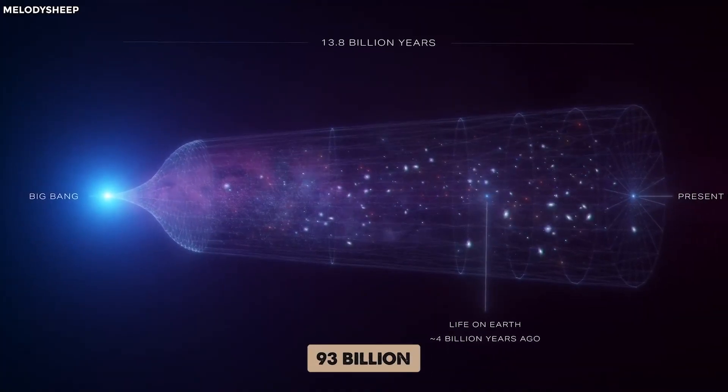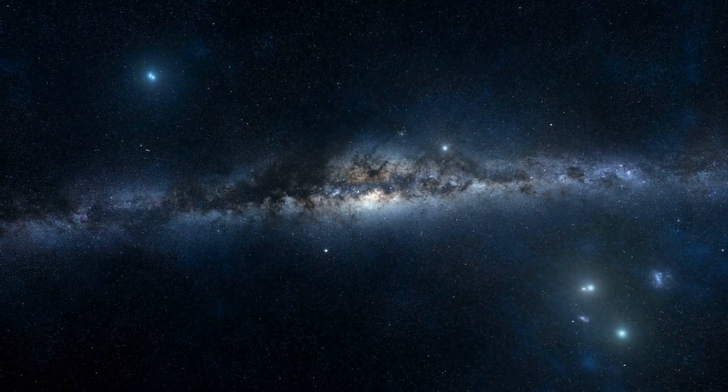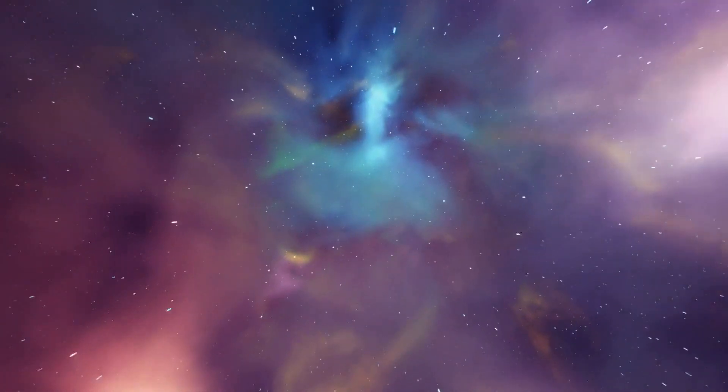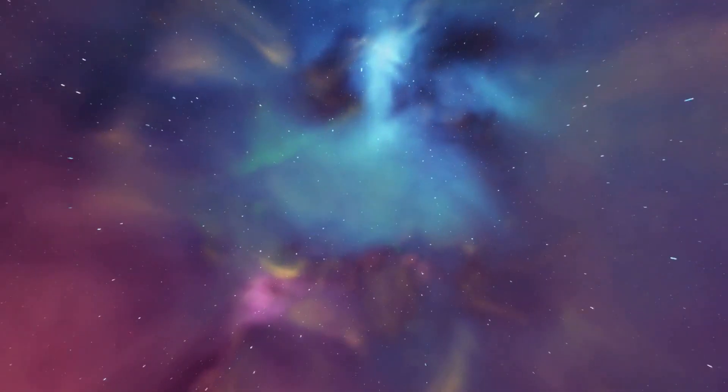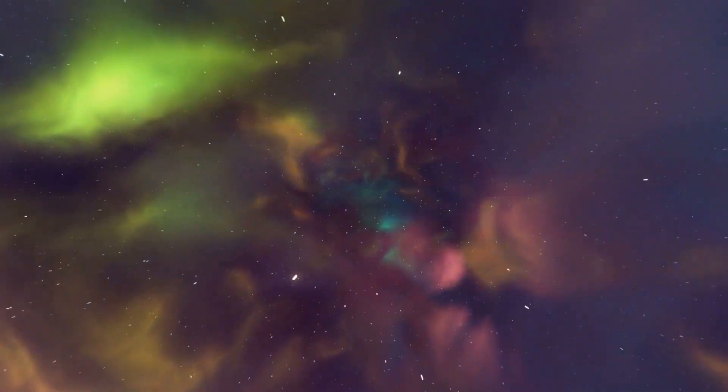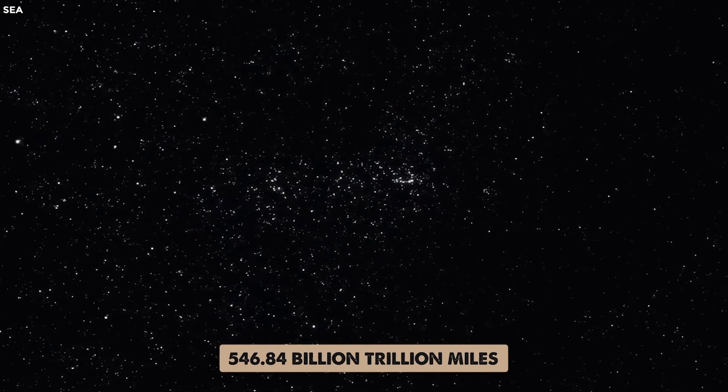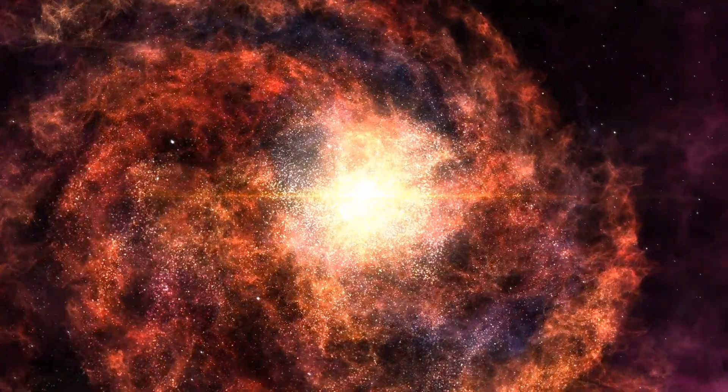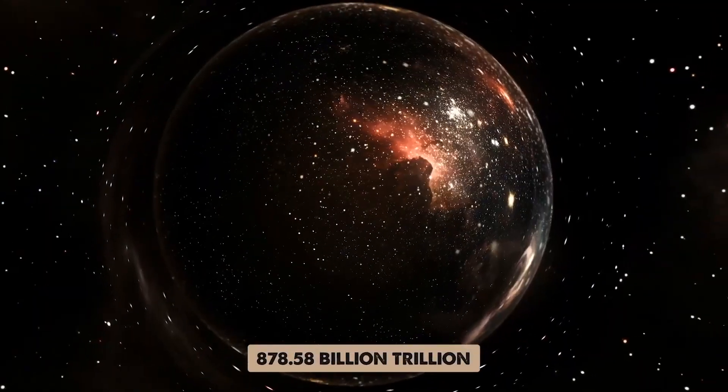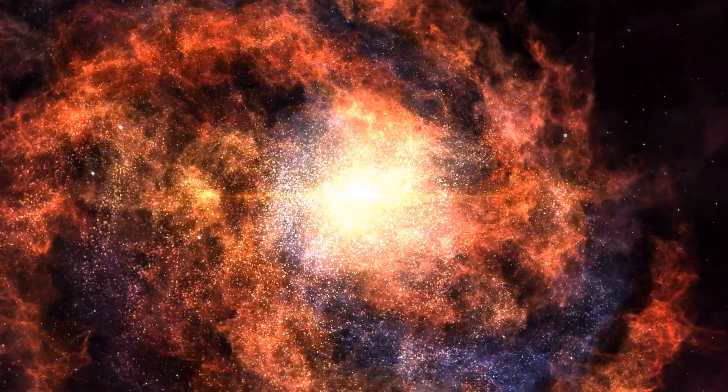At approximately 93 billion light-years in diameter, the observable universe is a mind-boggling expanse. To put it into perspective, a light-year is a unit of distance equivalent to about 5.88 trillion miles, or 9.46 trillion kilometers. So, the observable universe spans approximately 546.84 billion trillion miles, or 878.58 billion trillion kilometers. A truly awe-inspiring number.